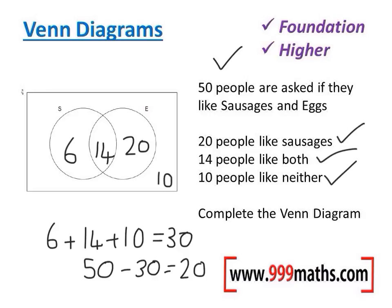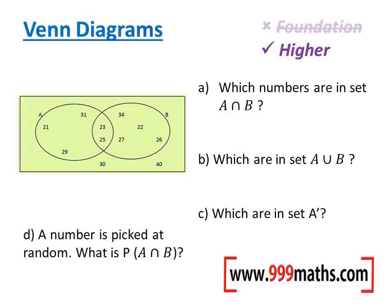Now there's one more question I want you to see before you try one on your own. So this question's slightly harder, and you'll only need to be familiar with this if you're doing the higher GCSE exams. That's because there's certain notation here that you need to be familiar with. So the first bit is the notation in question A. Which numbers are in set A ∩ B? Now this symbol here stands for AND, and the ∩ most people remember as AND.